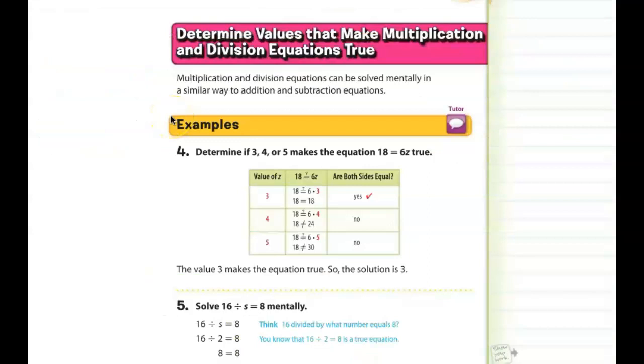So we're going to do the same thing now. We're going to determine the values that make multiplication and division equations true. Multiplication and division equations can be solved mentally in a similar way to addition and subtraction equations. Example number four. If the number 3, 4, and 5 makes the equation 18 is equal to 6z true. And 6z means 6 times z. Z is an unknown number. So you'll notice here that they tried 3 first. So if we replace the z with the number 3, so 18 equals 6 times 3. 6 times 3 is 18, so 18 equals 18.